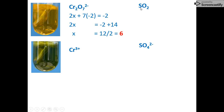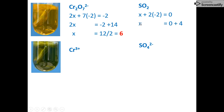For sulfur in sulfur dioxide, we write the same expression, but because this is a neutral compound we apply rule five, so it equals zero. There are two oxygens, each minus two from rule two. Solving for the unknown oxidation number for sulfur, we get an answer of four.